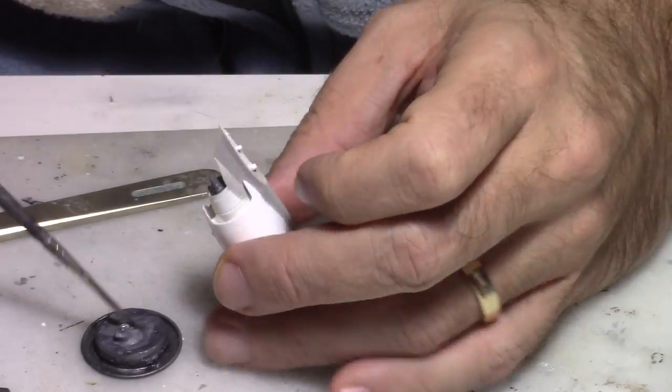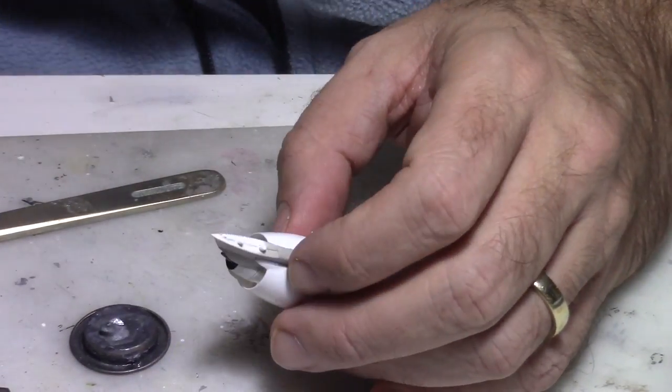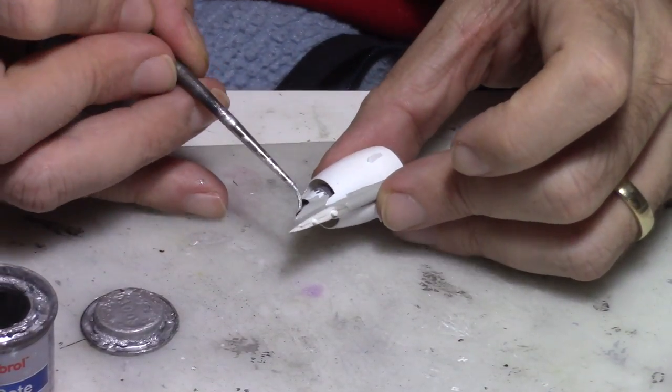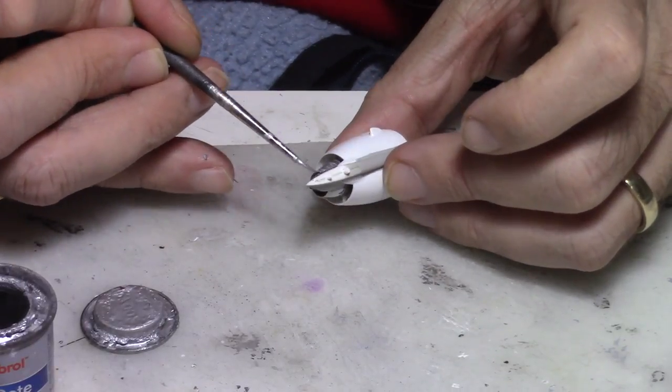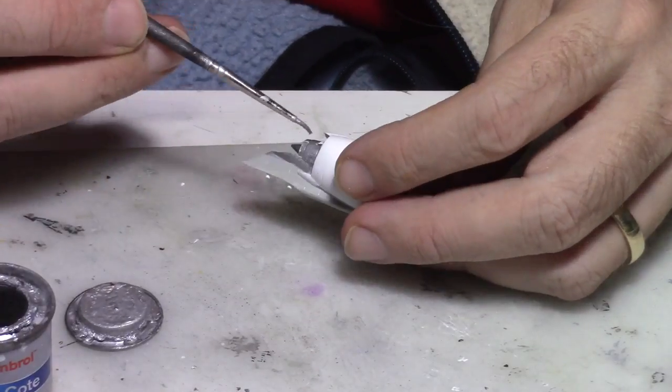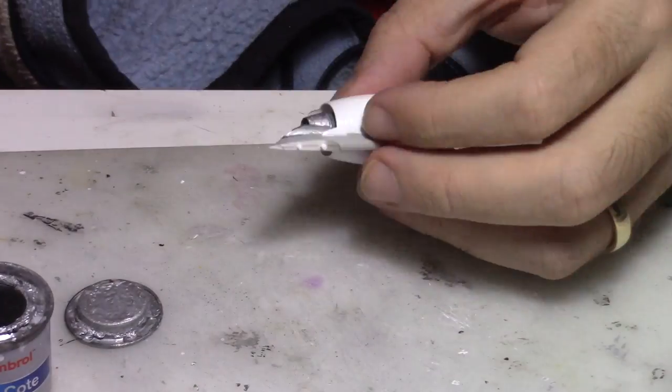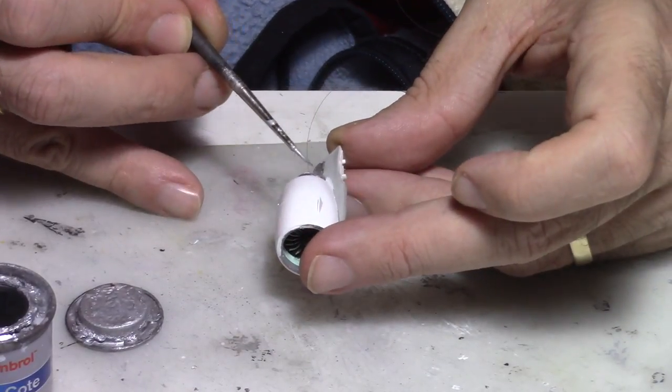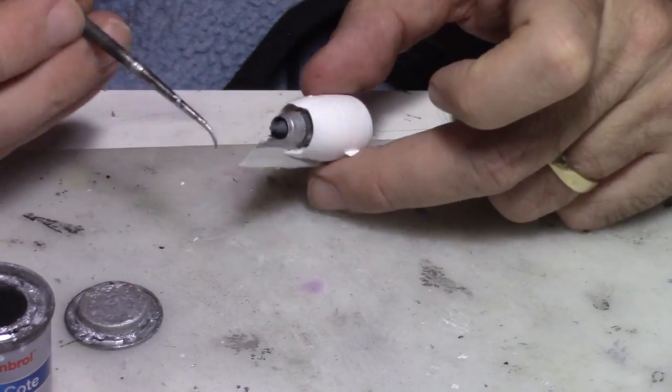After that we started painting some details on the engines. The exhaust of the engines is dark steel paint, and for the intermediate part of the engine I used regular metallic paint, more or less silver color. After that you can use weathering techniques which give you a pretty good finish.